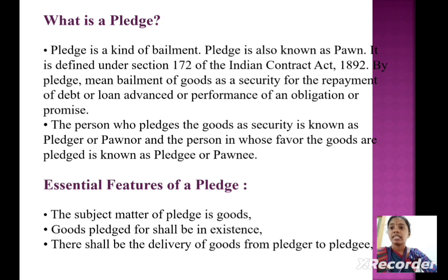What is a pledge? It is a kind of bailment, also known as pawn. It is defined under Section 172 of the Indian Contract Act 1872. By pledge we mean bailment of goods as a security for the repayment of a debt or loan advanced, or performance of an obligation or promise. The person who pledges the goods as security is known as pledger or pawnor. The person in whose favor the goods are pledged is known as pledgee or pawnee.